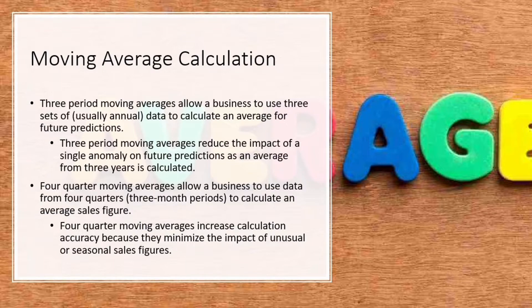Four-quarter moving averages allow a business to use data from four quarters — three-month periods — to calculate an average sales figure. Four-quarter moving averages increase calculation accuracy because they minimize the impact of unusual or seasonal sales figures.